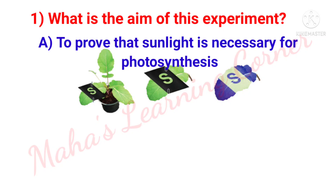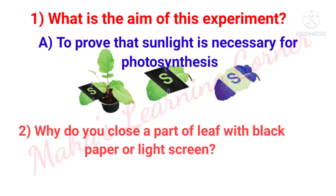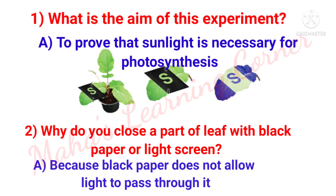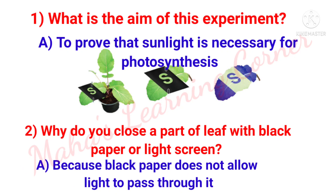Why do you close a part of a leaf with black paper or a light screen? Answer: Because black paper does not allow light to pass through it.